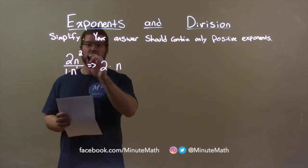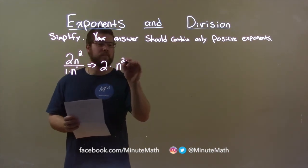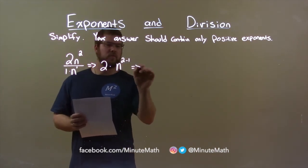So, we have n to the power of 2 minus 1, and we know that 2 minus 1 is 1.